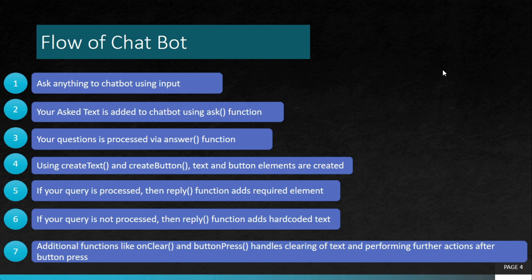In step five, your query is processed and the reply function adds the required element to the chatbot interface. If your query is not processed, the same function adds a hard-coded text like 'sorry, nothing is found' or similar.